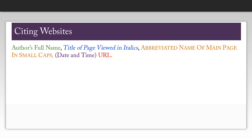In order to cite a website using the Blue Book, you need to look for the author's name, if available, the title of the page — which you can usually find by looking at the title bar at the top of your browser — and you will put this in italics. Then the main page title, which you will put in small caps, capitalizing as it appears on the page. You do need to use Table T13 to abbreviate this title.